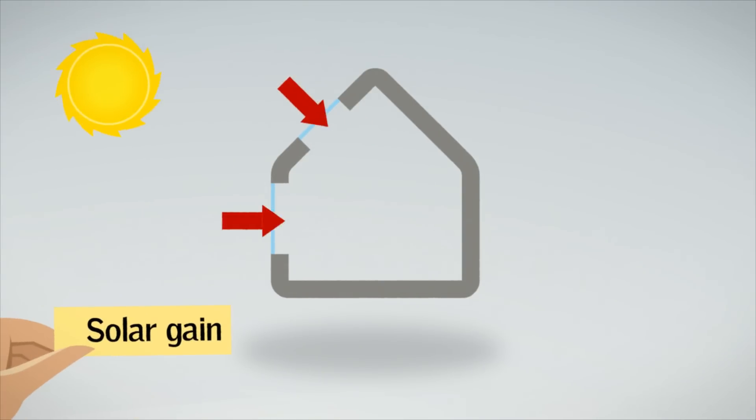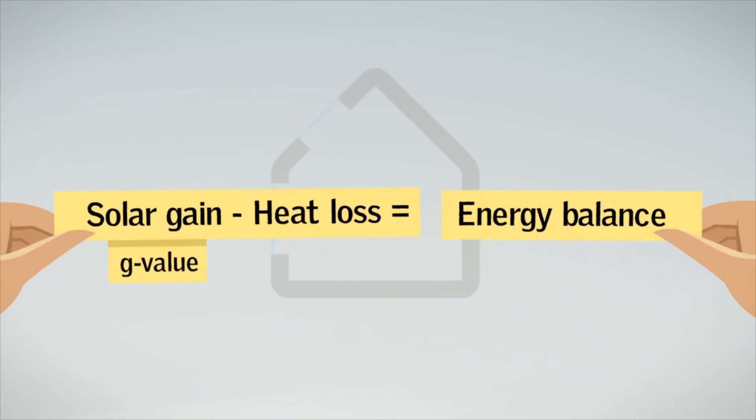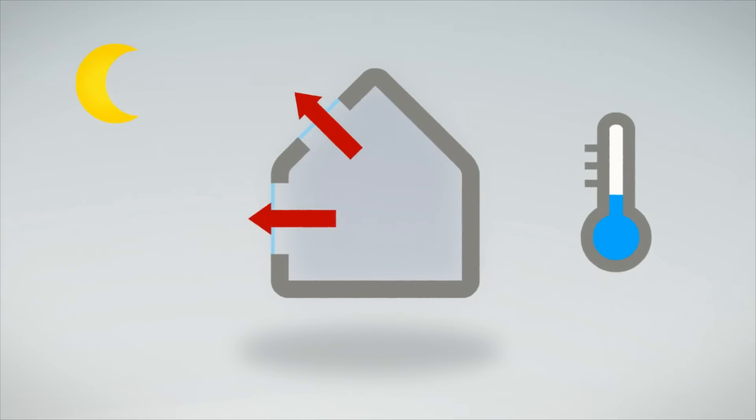Together, the solar gain minus the heat loss equals the energy balance. If the balance is too negative, the building gets cold and must be provided with more external energy. If the balance is too positive, the building can get too hot from solar gain. That's why it is important to control and maintain the right balance.